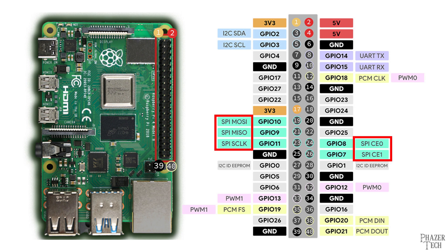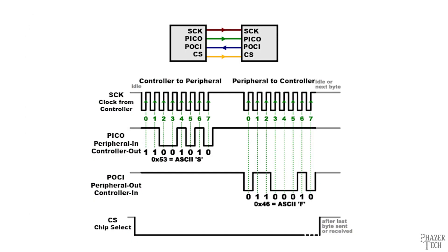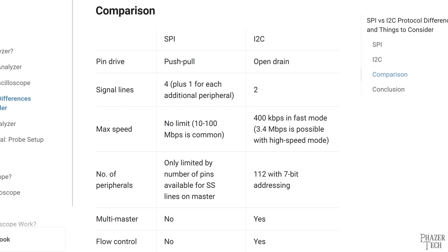SPI is another protocol supported by the Pi, using five pins, though only four are required. SPI has a clock and separate transmit and receive lines, which allows for synchronous communications. The CS pin tells the peripheral that it should wake up and receive or send data, and is also used when multiple peripherals are present to select the one you'd like to talk to. SPI can achieve much faster speeds than I2C, so it's used in situations where I2C isn't fast enough.